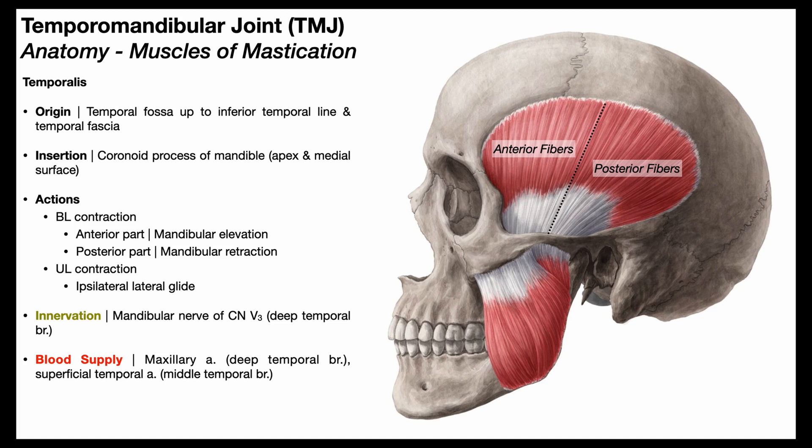There are four of them: the temporalis, the masseter, the medial pterygoids, and the lateral pterygoids.